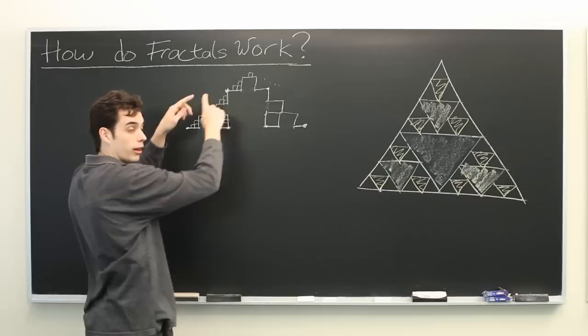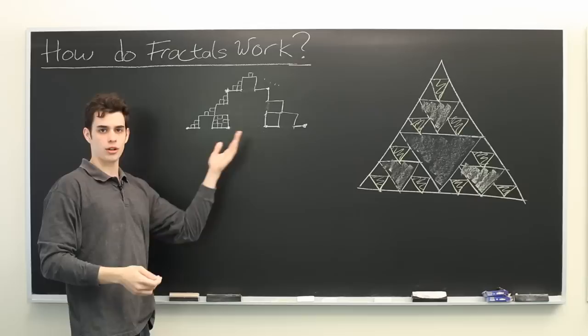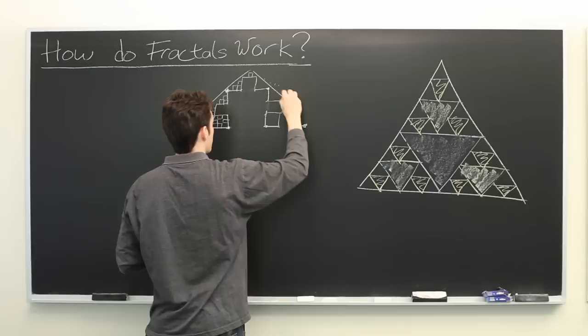See that eventually, if you line up these corners, it will start to look like a triangle. Which is unusual when you think that you start with a line and you start adding squares, and the result is something that looks triangular.